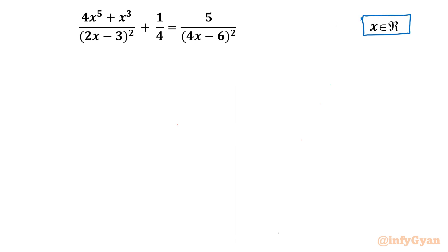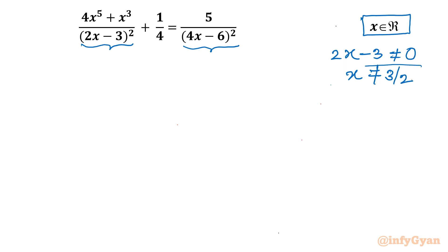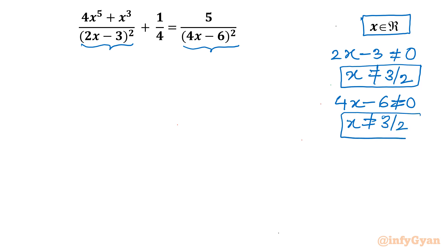Let's get started by writing the domain of the equation first. We have two denominators, so I will put that the denominator cannot be 0. First denominator: 2x minus 3 cannot be 0, so x cannot be 3 over 2. Second denominator: 4x minus 6 cannot be 0, which gives the same result. So the exempted value is x cannot be 3 over 2.